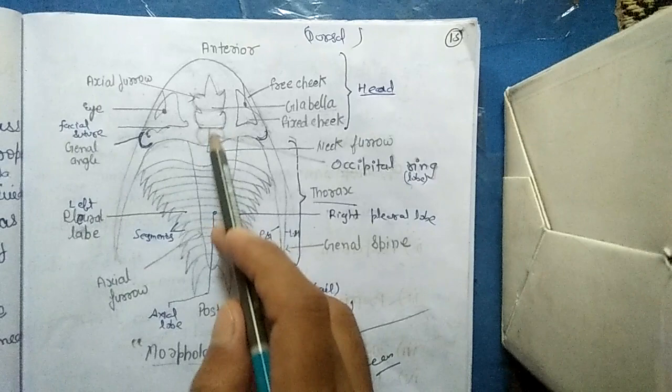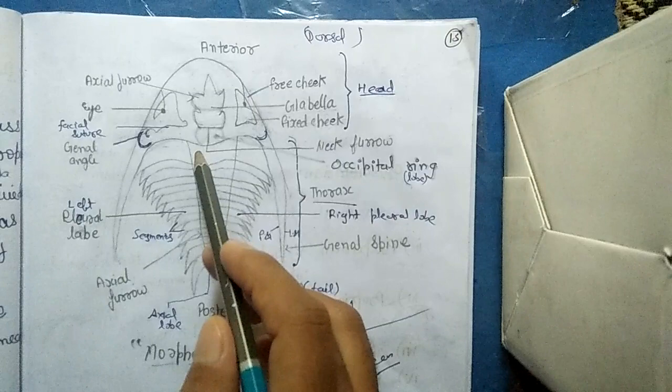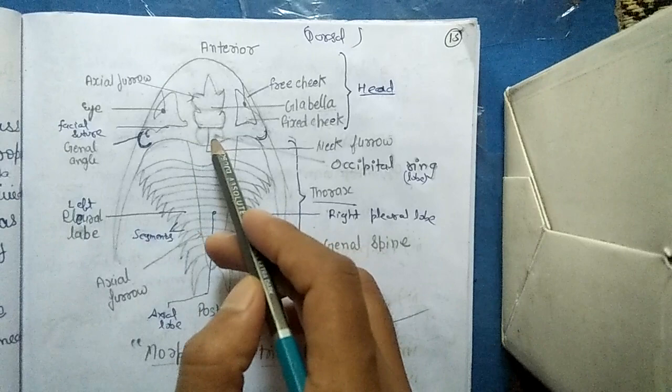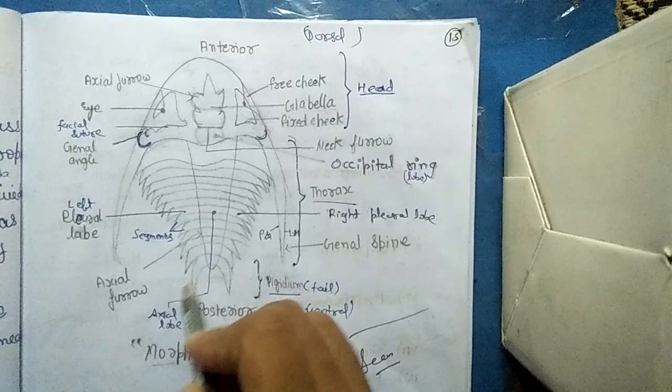This line is the neck furrow, and the lobe or ring that is situated at the bottom of glabella, that is farthest from anterior, is called occipital ring or occipital lobe. We can say the last lobe of glabella is called occipital ring or occipital lobe.